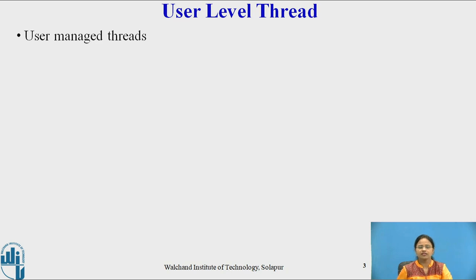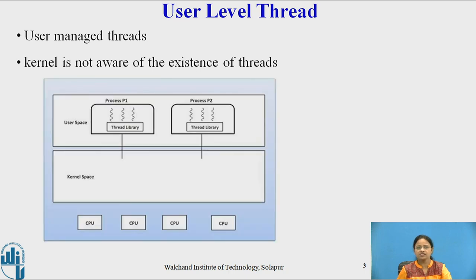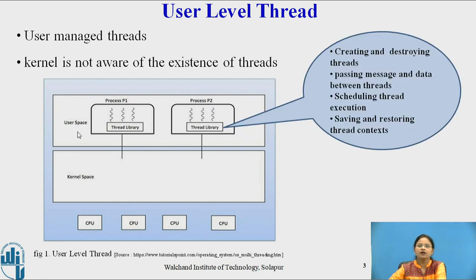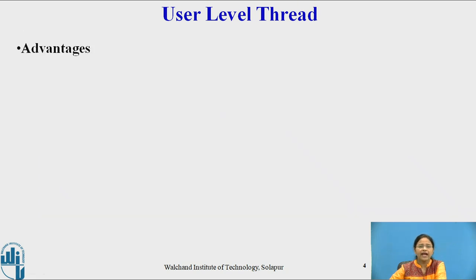User level threads are managed by the user. The kernel is not aware of the existence of the thread. As shown in this figure, we have process one and process two — both processes contain three threads — and we have a thread library. All these threads are present in user space. The thread library is responsible for creating and destroying threads, passing messages and data between threads, and thread scheduling and execution. The thread library also supports saving and restoring the thread context whenever there is switching between threads within a process.